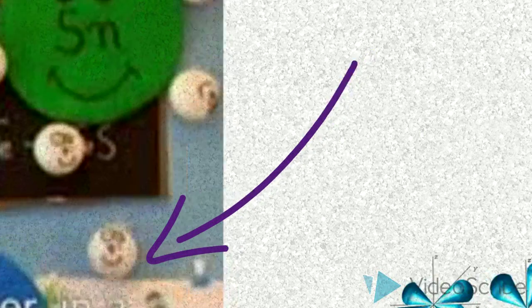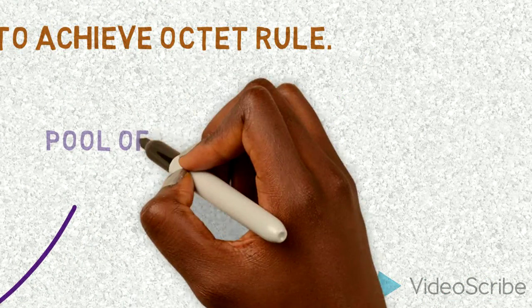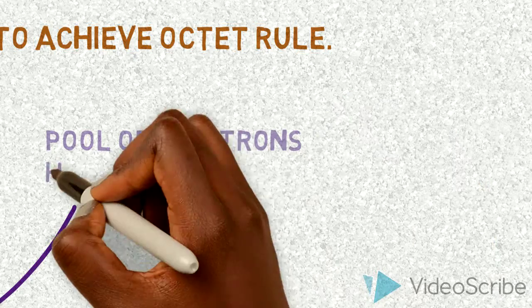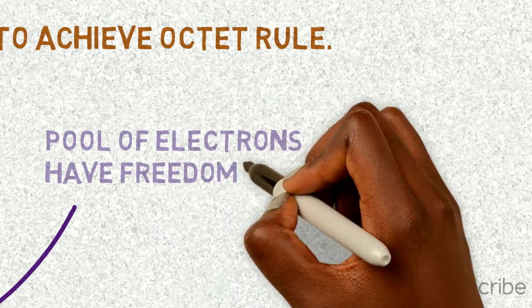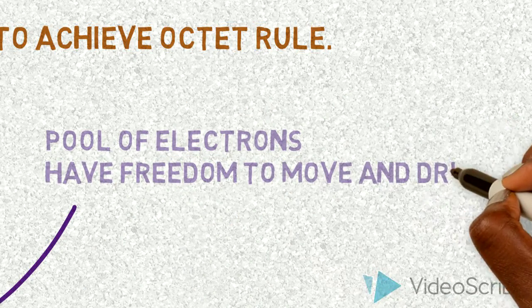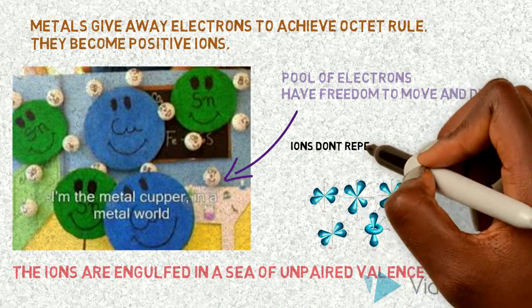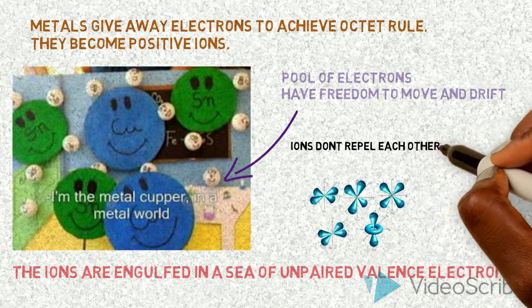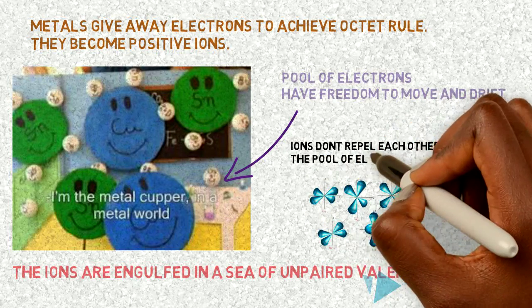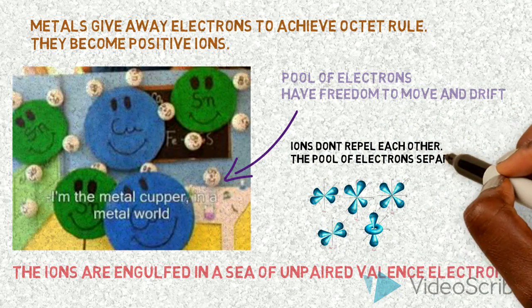These electrons are all shared by the ions and because they are unpaired, they have the freedom to move and drift in any which way they please. Since the ions are in the sea of electrons, they don't repel each other because the electrons are separating them.